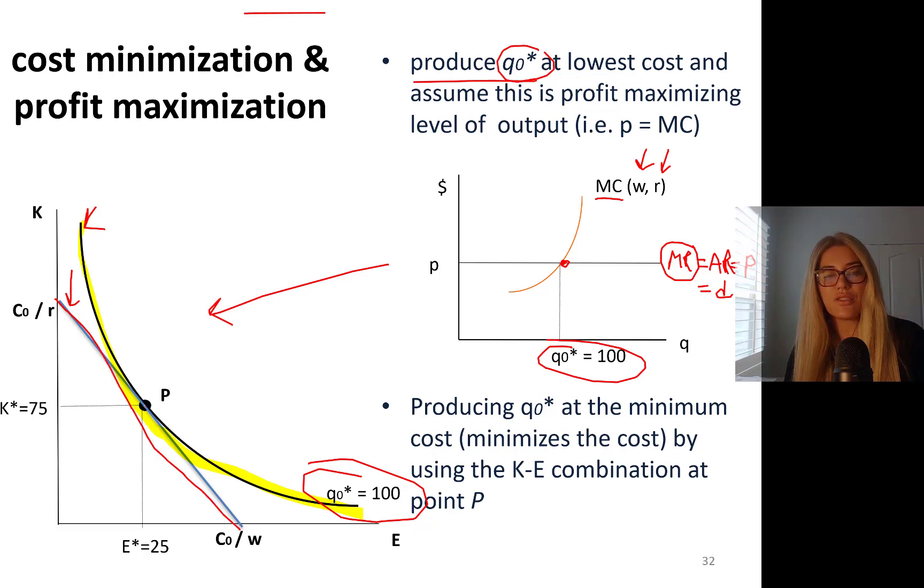Now you do your cost minimization. I minimize my cost and found the isocost curve that's tangent to my isoquant. So K=75, I need to hire 75 units of capital, I need to hire 25 units of labor.